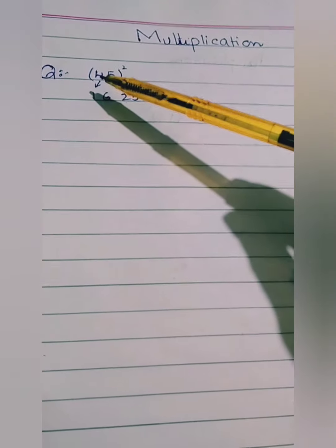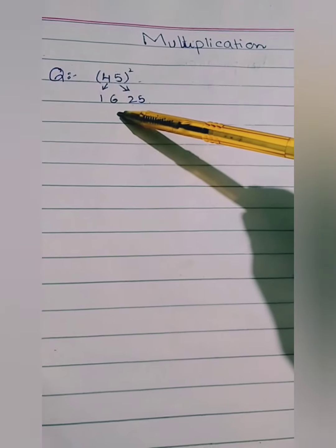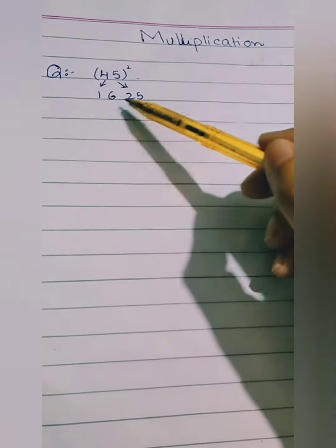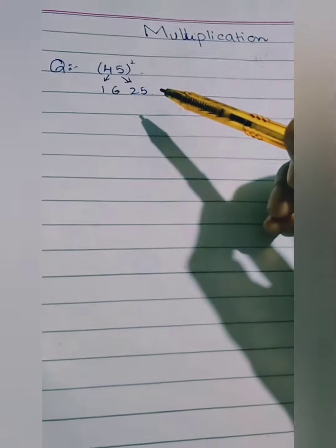Now what do we do? The next step is that 4 multiply 5, 5 multiply 2, we will write it in mid. 5×4 is 20, 2×2 is 4. It means that 6 and 2 will be 4 and 0.